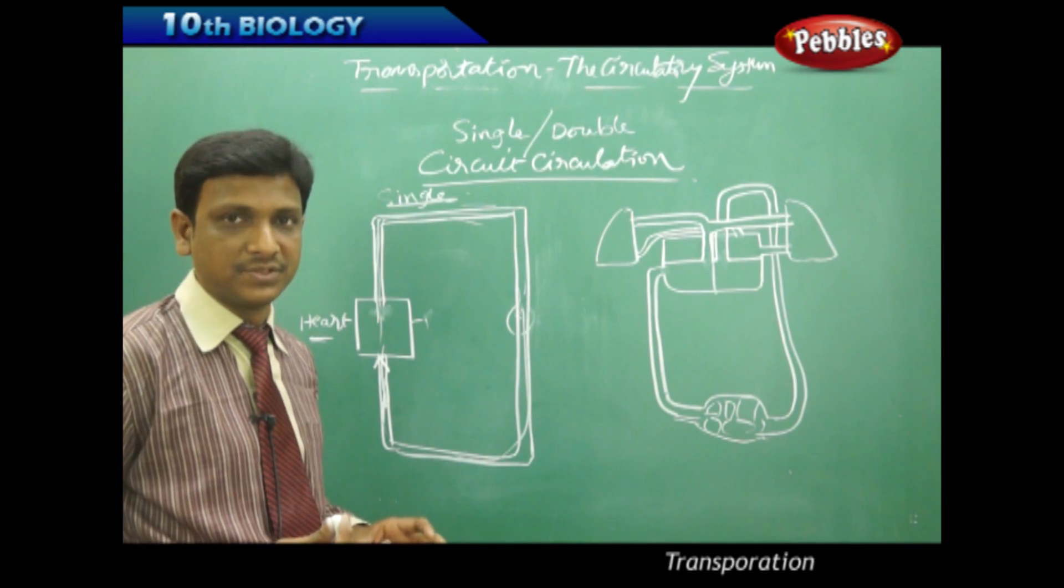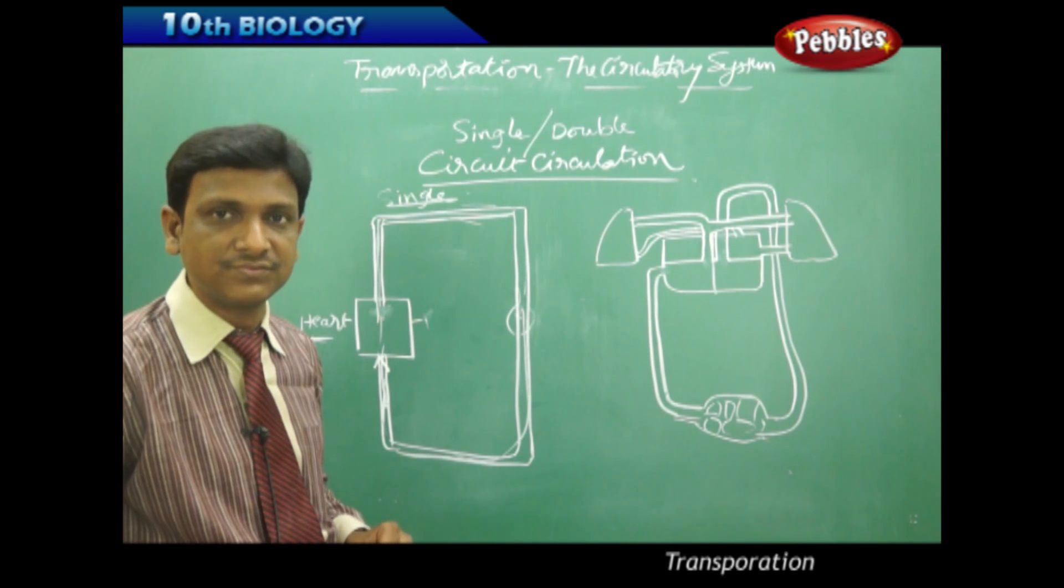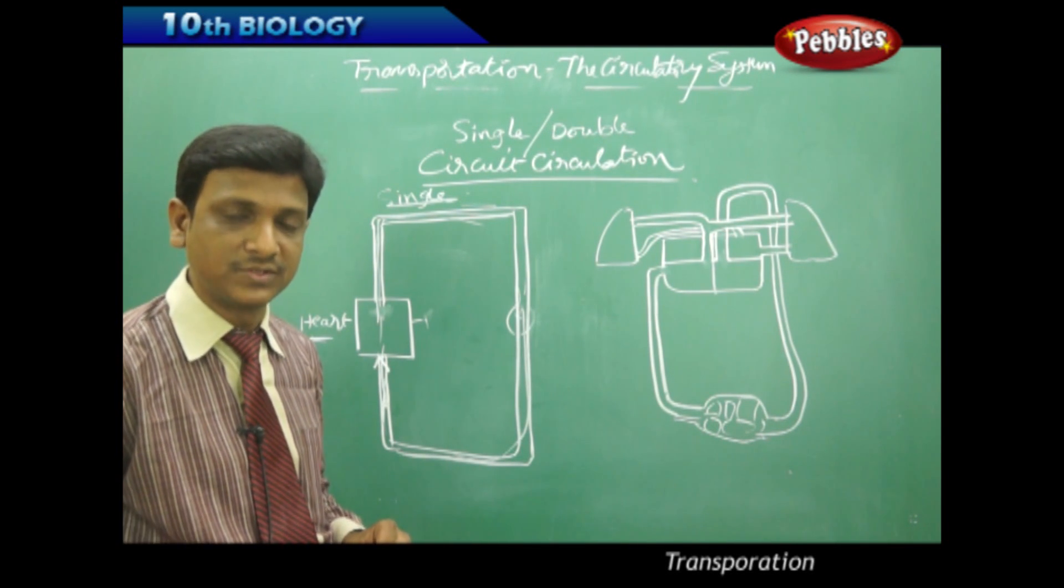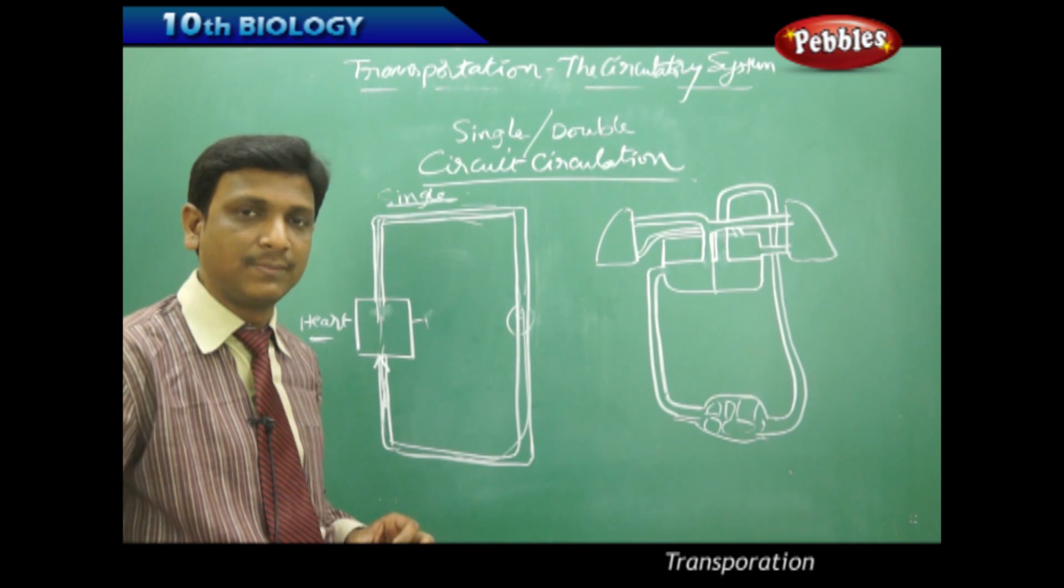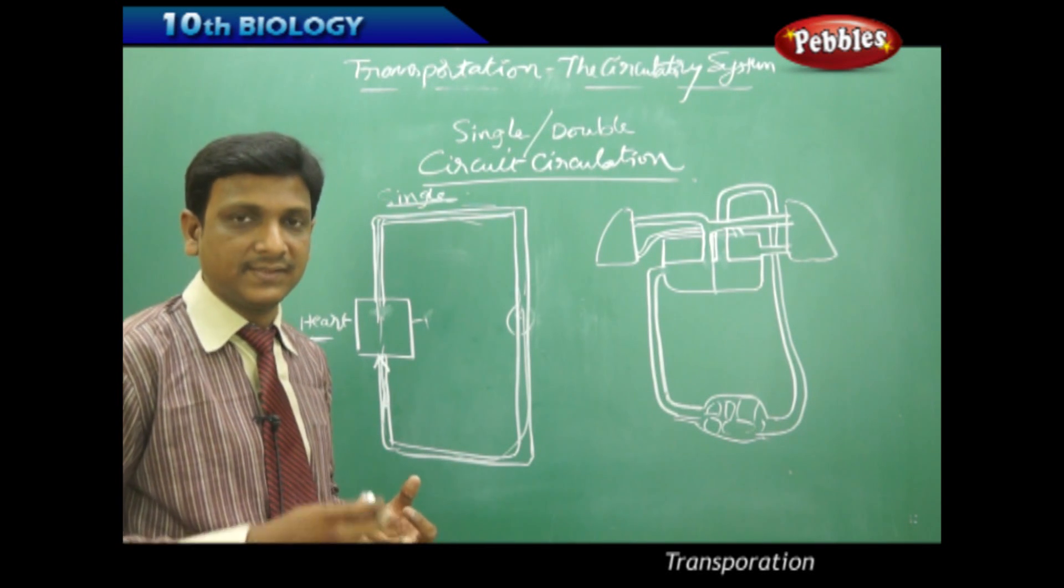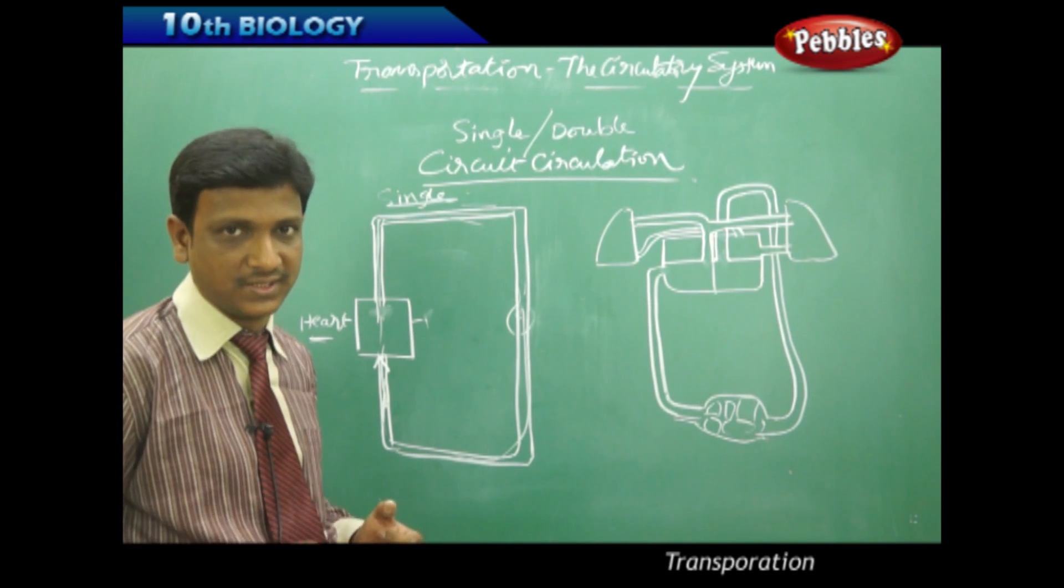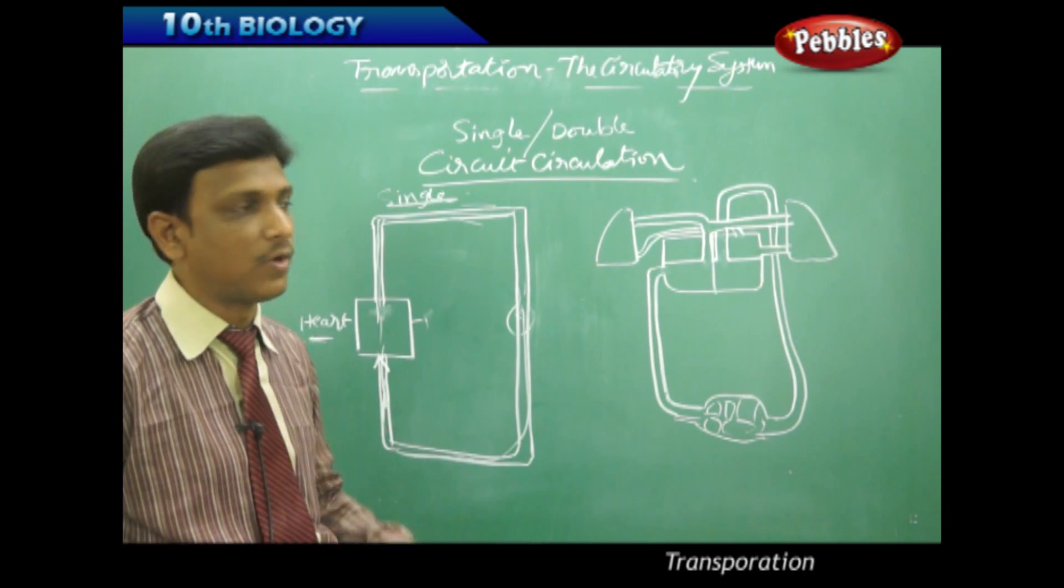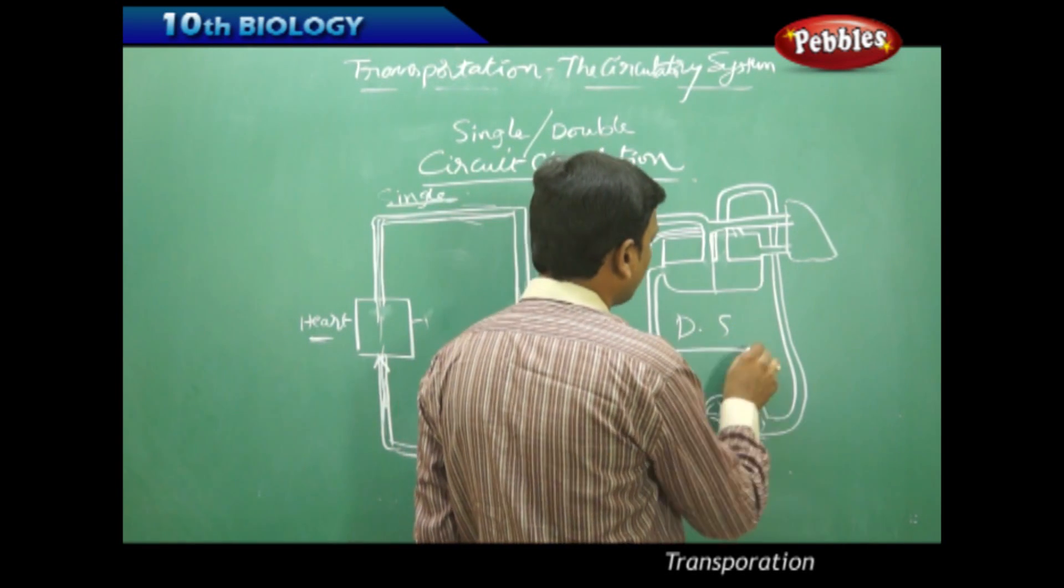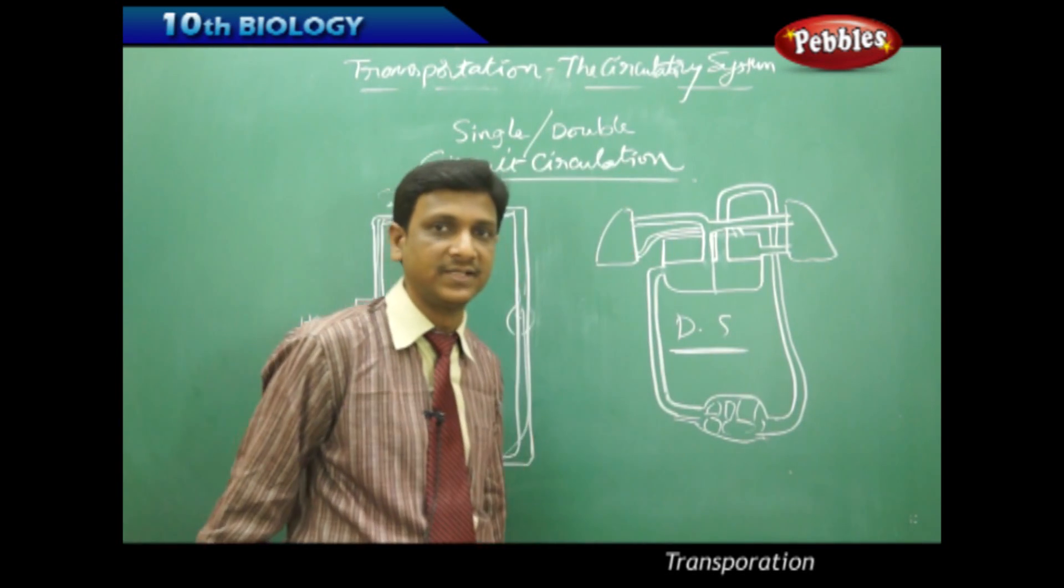Blood is pumped by the heart to lungs for purification, that is for oxygenation. Again, from the lungs, the blood is collected by the heart. The same blood is supplied to body parts. Again, from the body parts, the blood is collected. In this way, there are two circuits involved in it, so it is called double circuit circulation which is observed in human beings.